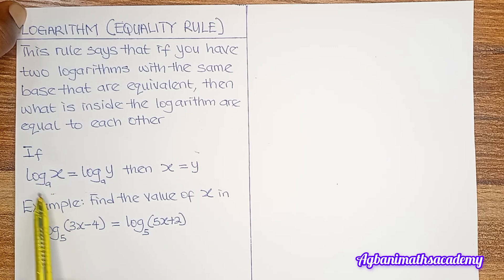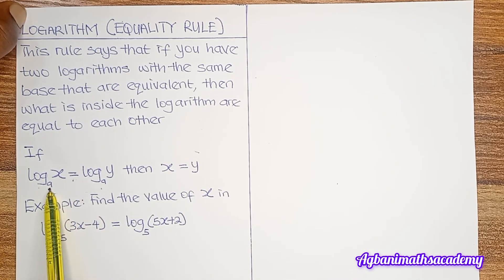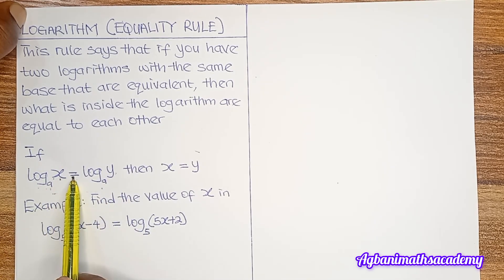Let's look at how this is expressed. We have log x base a is equal to log y base a. So using this equality rule, once you see two logarithms that are equal to each other and having the same base, all you need to do is equate what is in the logarithm: x is equal to y.